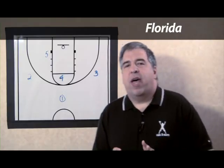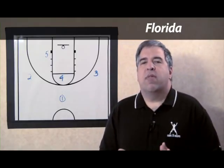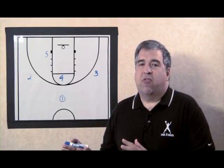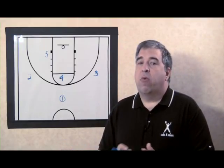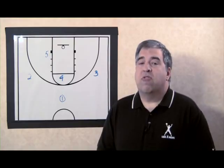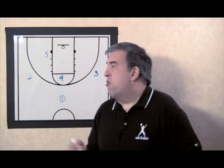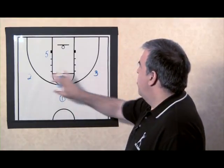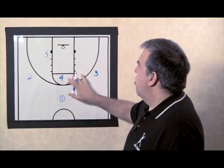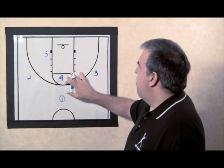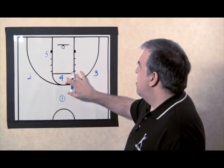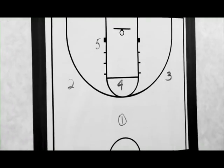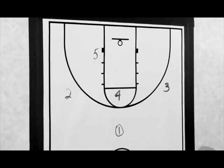We're going to start this action out of a 1-3-1 set, and you can utilize this against a 2-3 zone as well as against a 1-2-2 zone. What we have here is our point guard with the ball, 2 and 3 on the wings, our forward at the high post, and our center on the low post.